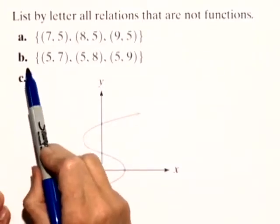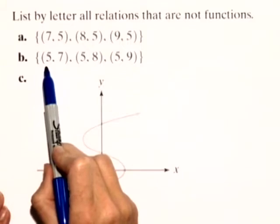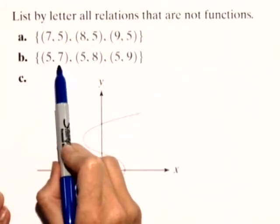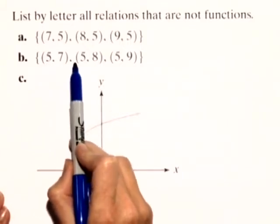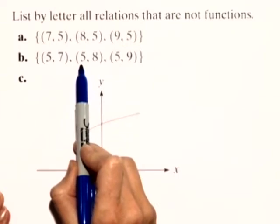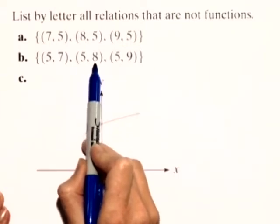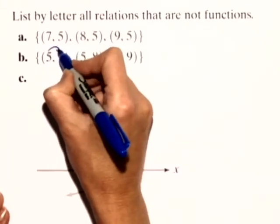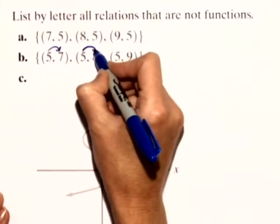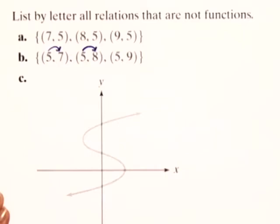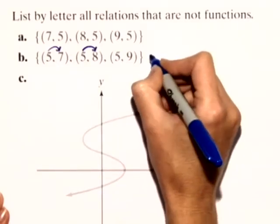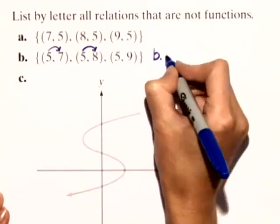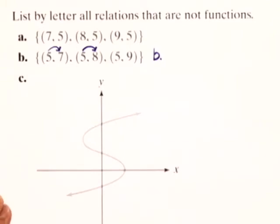Let's look at B. B has a first element of 5 paired with a second element of 7. And then notice we have a first element of 5 again, but it's paired with a different second element of 8. So because this 5 is paired with 7, and then 5 is again paired with something different, 8, it makes it not a function. So B is not a function.